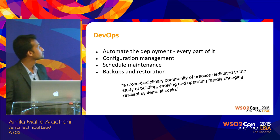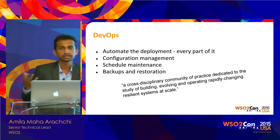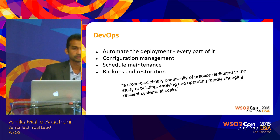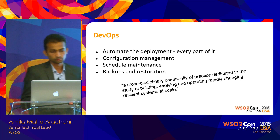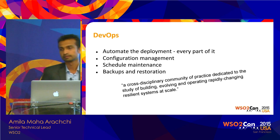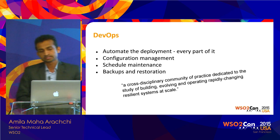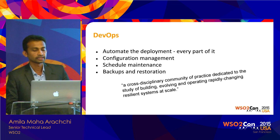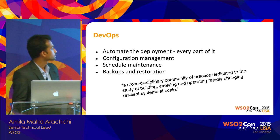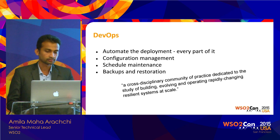Something very important these days is configuration management. In auto-scaling scenarios and disaster recovery, you need to bring up new instances very quickly, restore backups, and so on. For that you need configuration management tools like Puppet, Chef, Ansible, or similar — otherwise you'll have to manually bring up a VM, download the pack, configure everything, and by the time you're done the damage might already be done. DevOps should also schedule maintenance rather than doing ad hoc work, and they are responsible for backup and restoration of data.